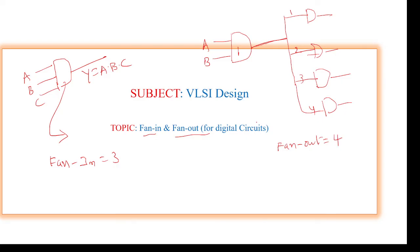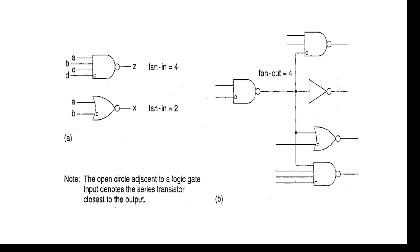Here we can see another example — this NAND gate is having four inputs: one, two, three, four. The output is A dot B dot C dot D, whole bar. The number of inputs for this gate is four, so the fan-in is four.